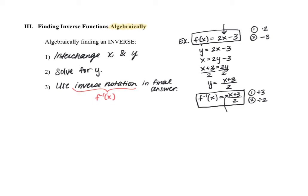The key to inverses is that every single operation gets undone. Instead of multiplication by 2 in the original function, you see division by 2 in the inverse, because multiplication and division are inverse operations. The original function has subtraction by 3, and the inverse function has addition by 3. Not only do all operations get undone, but they get done in reverse order — we multiply by 2 first and then subtract 3 in the original, so in the inverse we add 3 first and then divide by 2. That inverse function essentially undoes every single operation from the original.